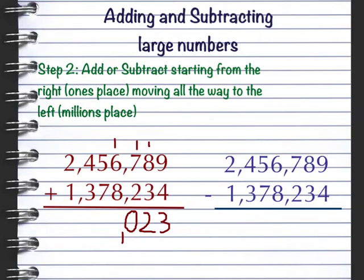One plus six is seven. Seven plus eight is 15. Carry my one. One plus five is six. Six plus seven is 13. Carry my one. One plus four is five. Five plus three is eight. I'm going to put in my comma. There is no carrying here. We're regrouping. So two plus one is three. My answer is 3,835,023.